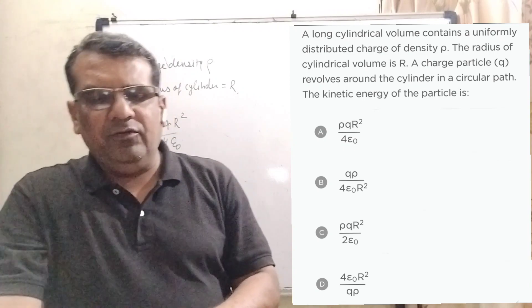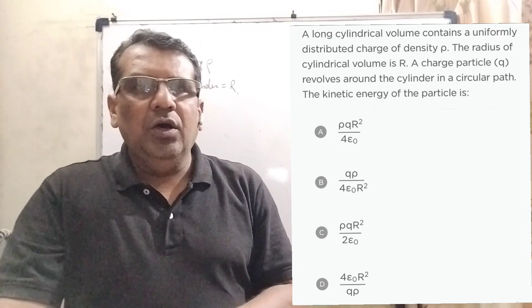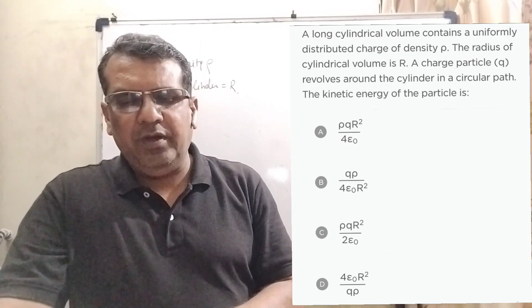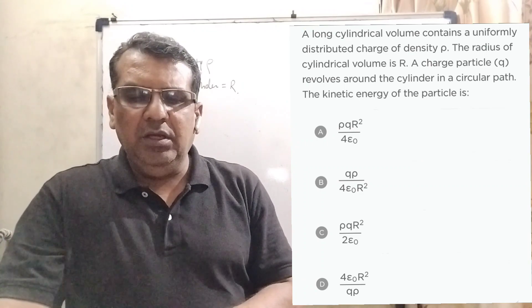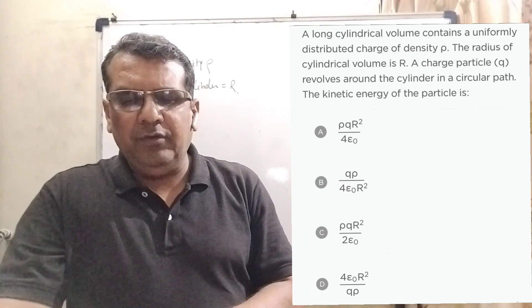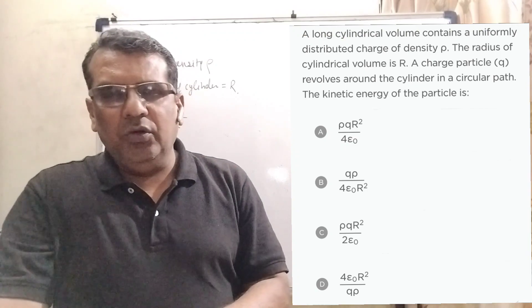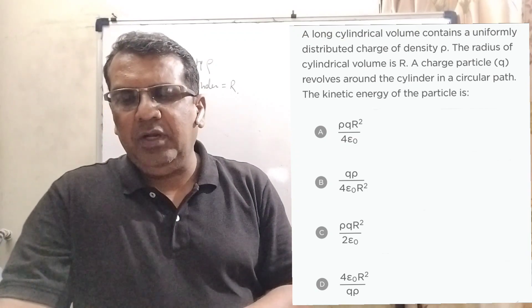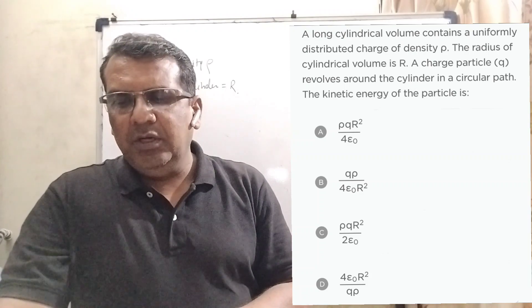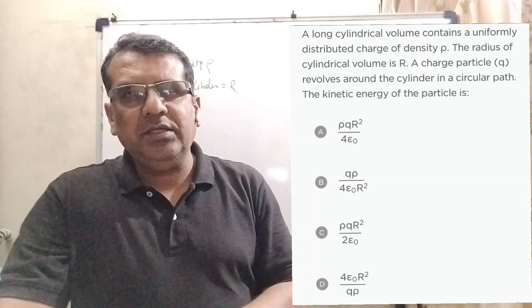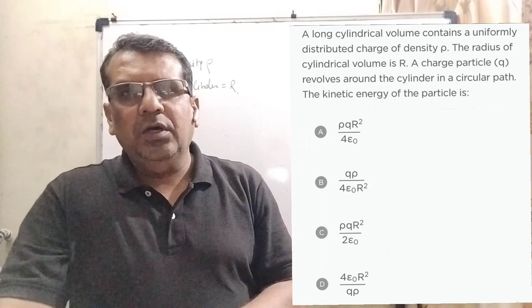Here we have given four options. Option A: ρQR²/4ε₀. Option B: Qρ/4πε₀R². Option C: ρQR²/2ε₀. Option D: 4ε₀R²/Qρ.